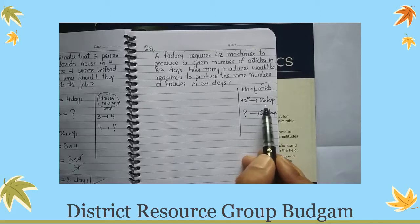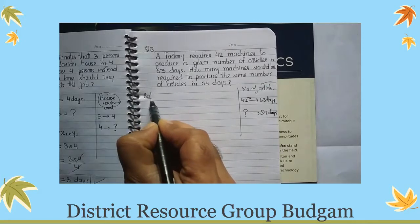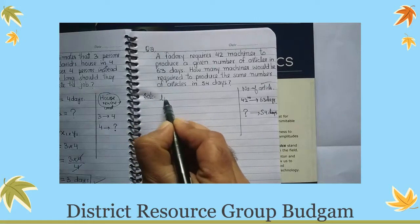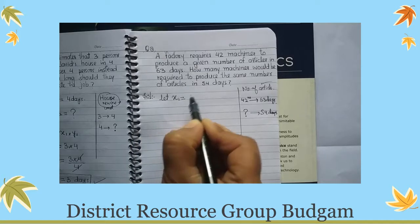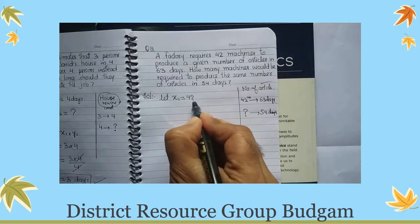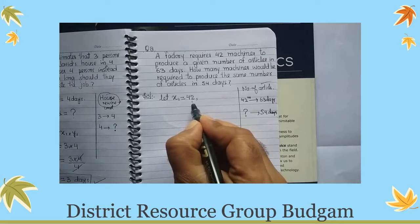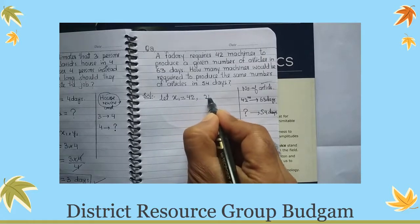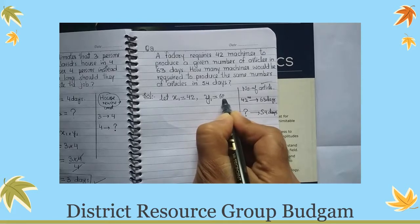Toh jab hum likheenge, ham kaise let karenge. X1 will be number of machines, 42 machines, to make the given number of articles in y1 days, which is 63 days.